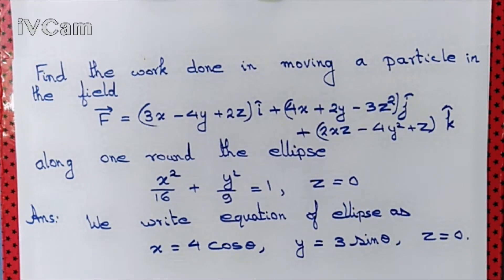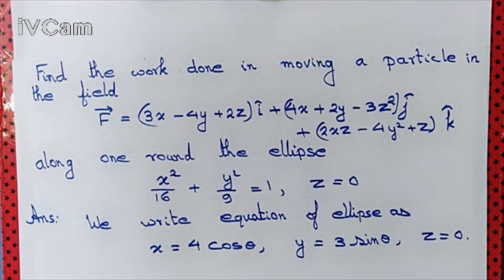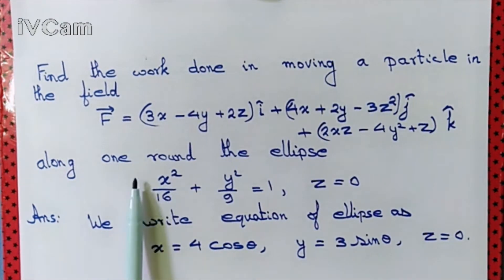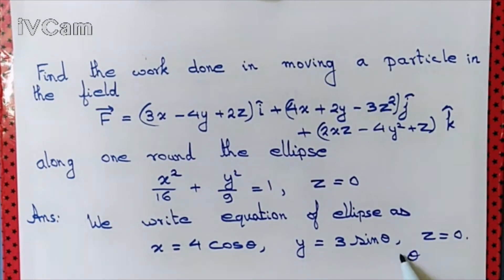Now we need to calculate F dot dr. After all, work done is the integral of F dot dr. For one complete round, theta should change from 0 to 2 pi.